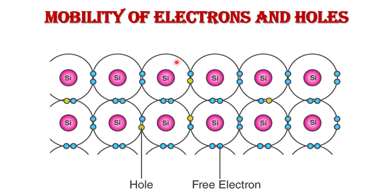The elevation of an electron from its inner shell to a higher shell results in the creation of a hole in the semiconductor. Since holes experience a stronger atomic force from the nucleus than electrons do, holes have lower mobility. This is illustrated in the bond model of electrons in silicon — the yellow indicates holes and blue indicates free electrons.